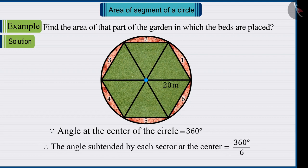So, we can say that the angle subtended at the center by each sector will be 60 degrees, which is represented as follows.